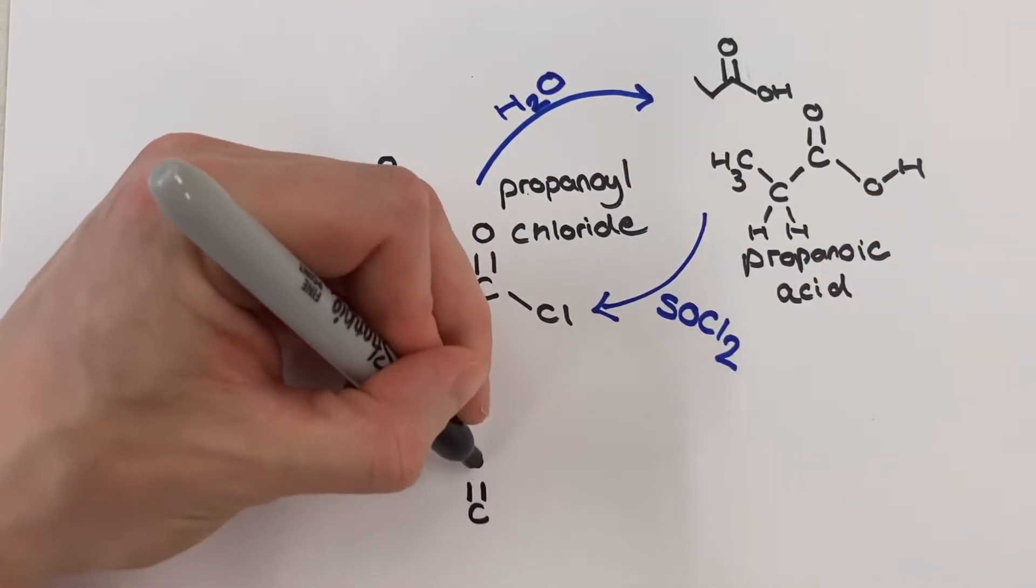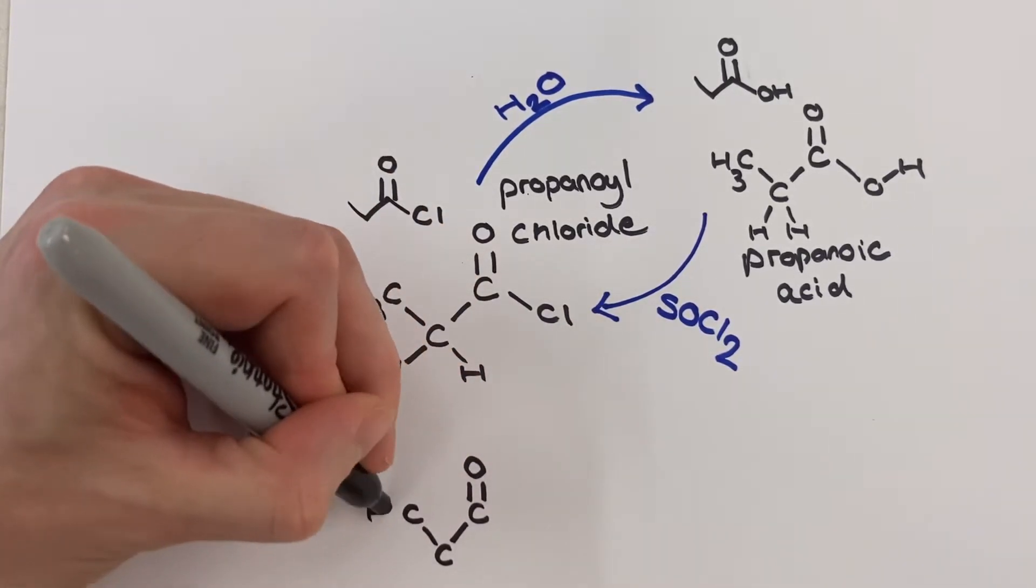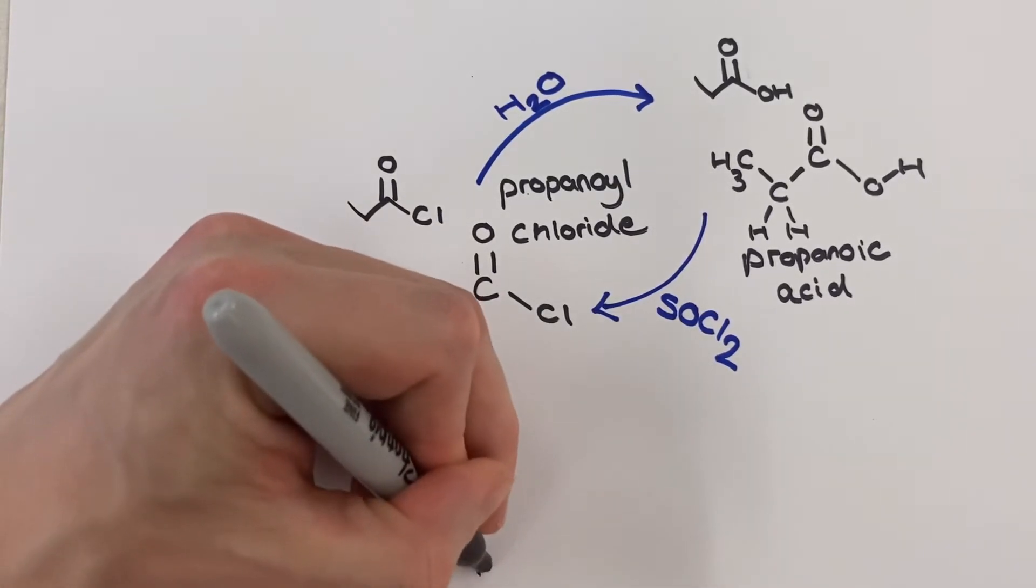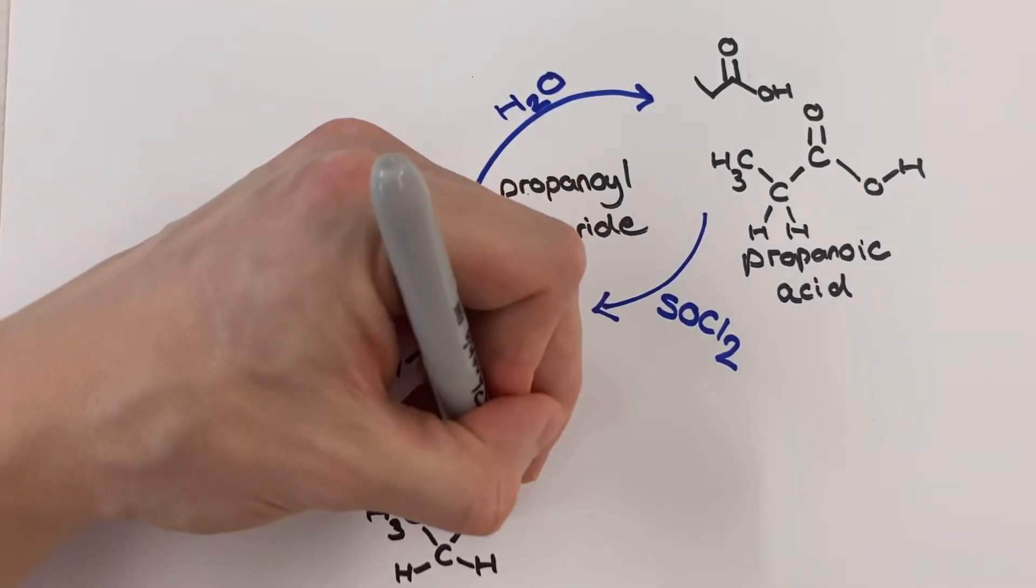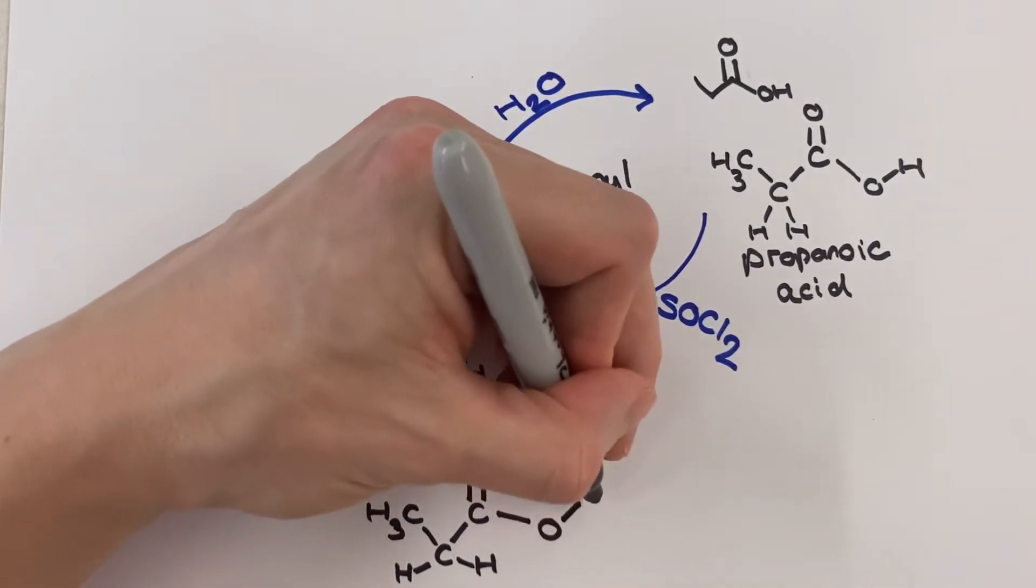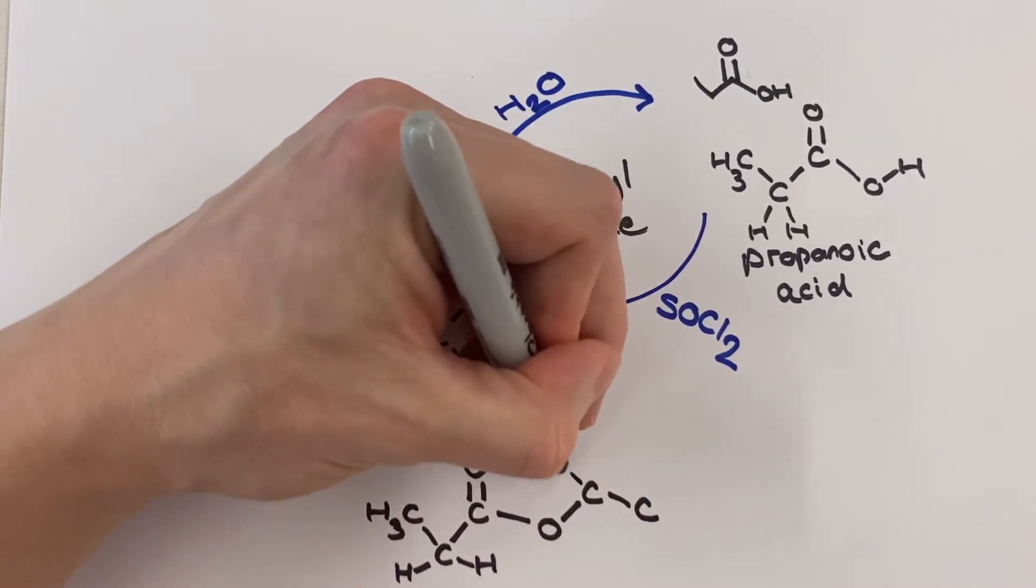Next up we're going to use our propanoyl chloride to make an ester, and to make our ester we'll need to react this acyl chloride with an alcohol just like when we made an ester using an alcohol and a carboxylic acid. However, unlike that reaction, this one using the acyl chloride does not require an acid catalyst.